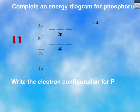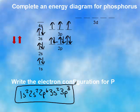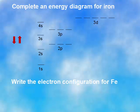I'm going to draw it for phosphorus. So your energy diagram should look like so. Now make sure that you have 1 in each 3p and your electron configuration. 1s2, 2s2, 2p6, 3s2, 3p3. And go ahead and draw iron.